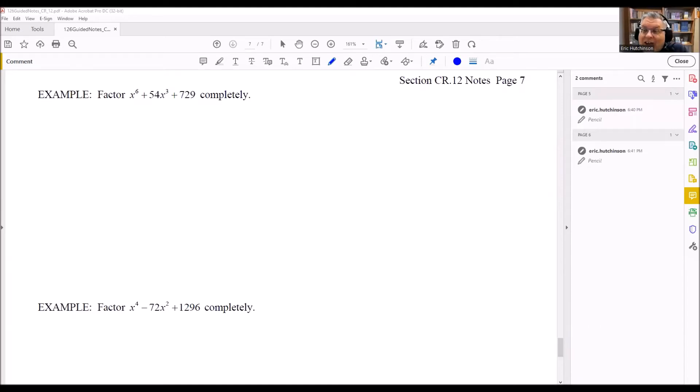For these problems, we have higher powers on the x here, but we're still going to be using some factoring techniques that we learned already for this session. So for this first one, we notice that we have a 6, a 3, and we have 729. So this is actually one that we're going to factor like this.